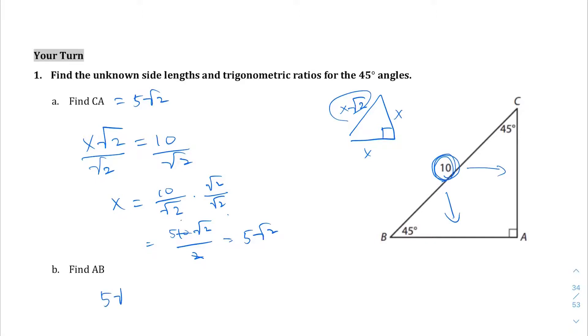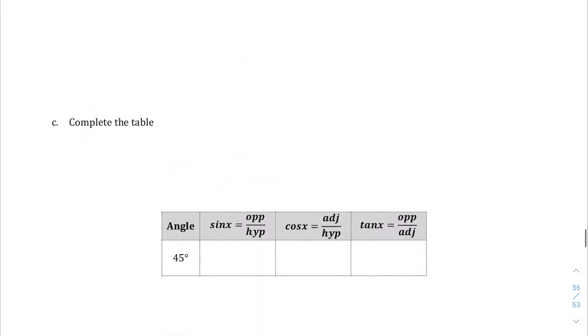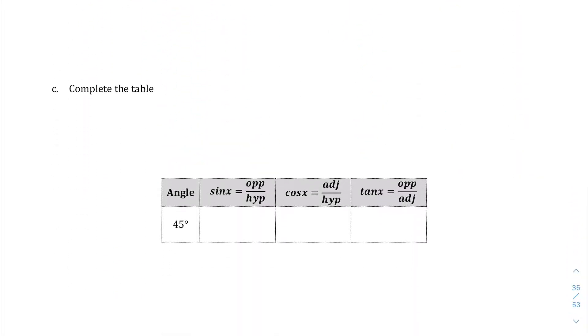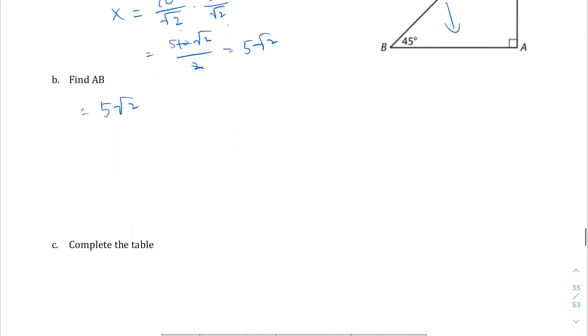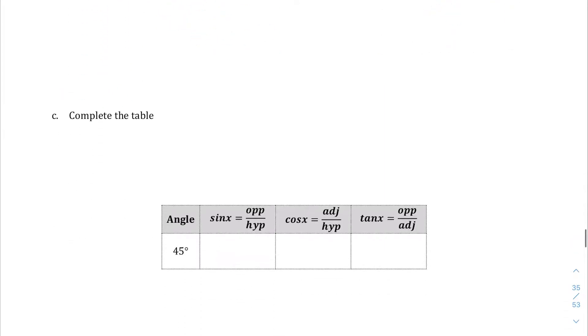Let's go to question c. We're going to complete the table, presumably for this triangle here. If we know that this is 10, this is 5√2, 5√2, and the triangle is BAC here.